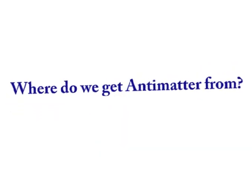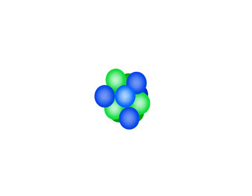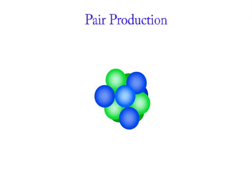We sometimes get positrons naturally from radioactive decay or from cosmic rays from outer space. Also, we can create antimatter artificially in the laboratory by sending high-energy electromagnetic radiation like gamma rays onto an atomic nucleus, resulting in a particle and its corresponding anti-particle. This process is called pair production — basically it's a reverse of the annihilation process. The reason why there's such a low amount of antimatter in this universe compared to normal matter, as opposed to equal amounts of both, is still a mystery to science.